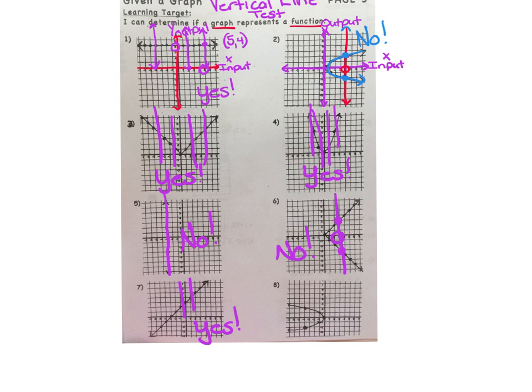And finally, if we drop a vertical line here for example, you can see that we have two output values for the one input value. So this fails the test. No, this is not a function. Please check your work. This concludes page 5.